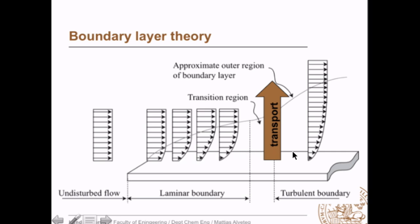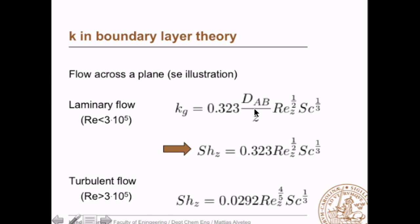Then we go into a turbulent boundary layer. Why does it become turbulent? The thickness of the layer increases, and thinking about the Reynolds number, it has to do with the characteristic length — this distance — and you get turbulent flow beyond a certain distance. For laminar flow, the Sherwood number equals 0.323 times Re^0.5 times Sc^(1/3). For turbulent flow, we instead get Sherwood number 0.292 with different exponents for the Reynolds number, and the same exponent for Schmidt number.